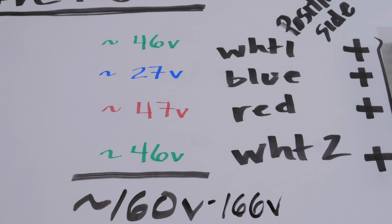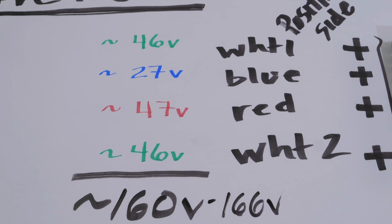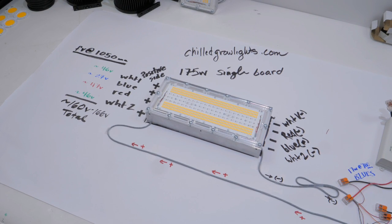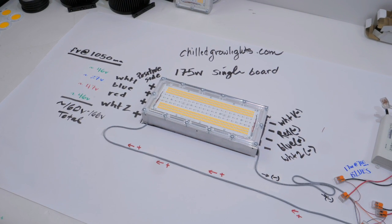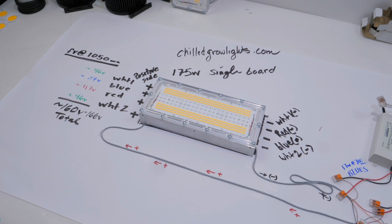For the people that are interested in going a little more into the DIY, maybe trying some light recipes and splitting up these channels, I want to go into a little more detail on how it works, because I think a lot of people were confused by the 160-some odd volts.